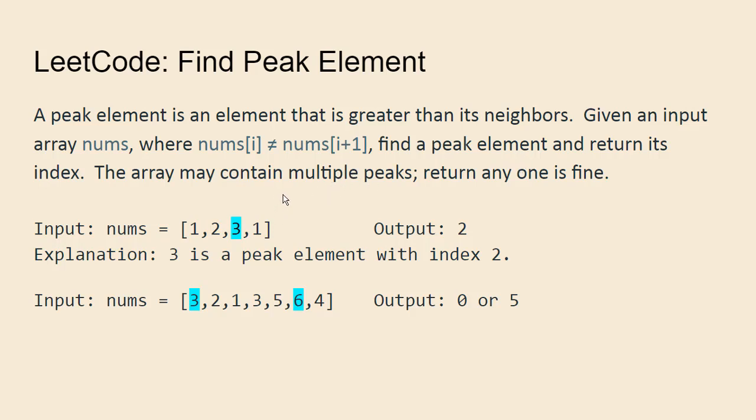Let's look at the first example. In this array, the only peak element is three. It's greater than two and greater than one, so we should output two.